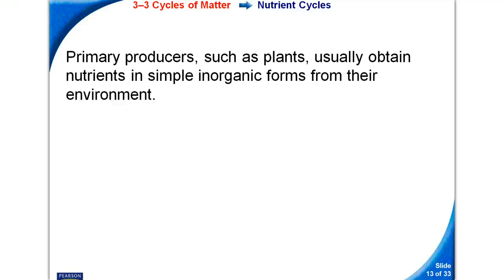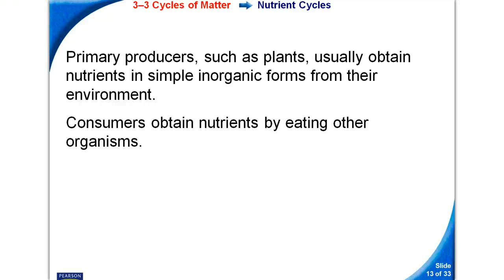Primary producers, such as plants, usually obtain nutrients in simple organic forms from their environment. Consumers obtain nutrients by eating other organisms.